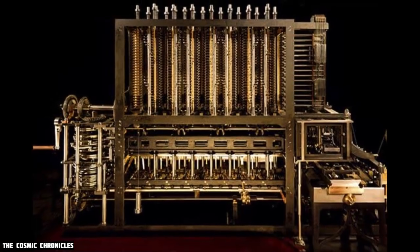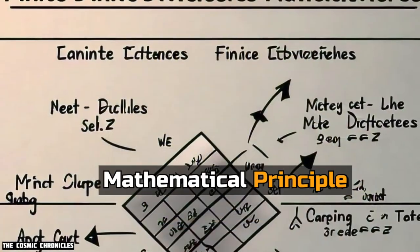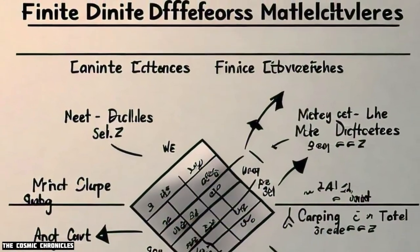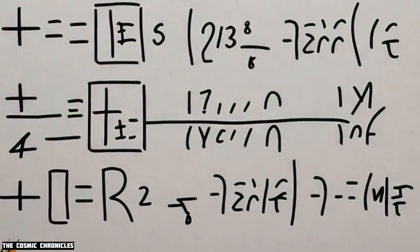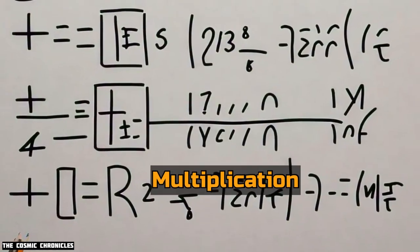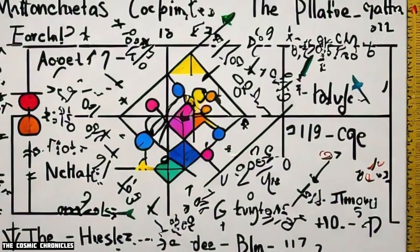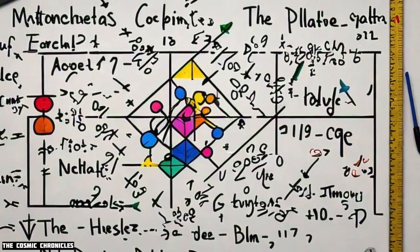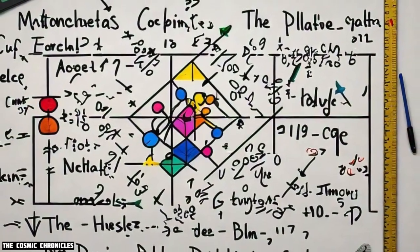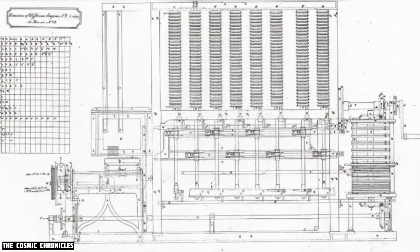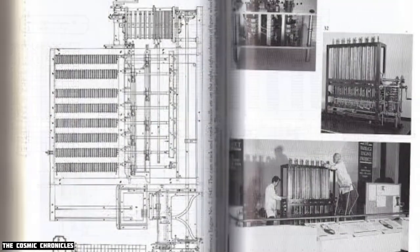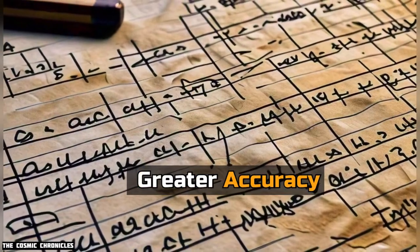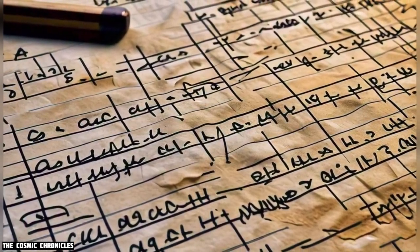The Difference Engine was based on the mathematical principle of finite differences, which allowed it to predict the outcome of polynomial equations without the need for multiplication or division — operations that were difficult to perform mechanically with the technology available at the time. Babbage's vision was to create a machine that could produce mathematical tables with far greater accuracy than the manual calculations of the day.